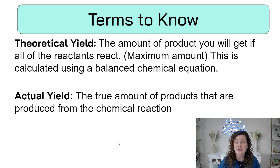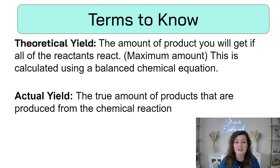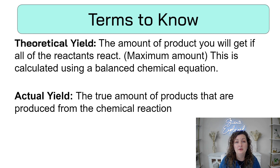So here are some terms you really need to know. Theoretical yield is the amount of product you will get if all the reactants react. In other words, this is the maximum amount that you can possibly get out of the chemical reaction. This is like the perfect world scenario, so theoretical is always going to be a larger number than what happens in real life.